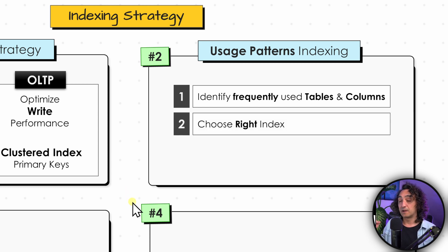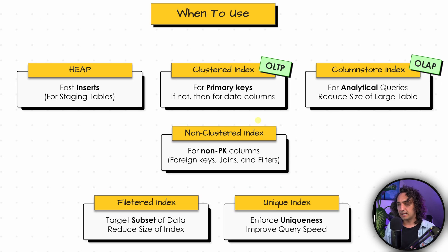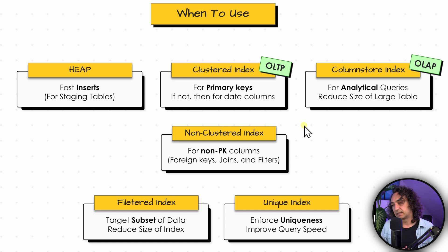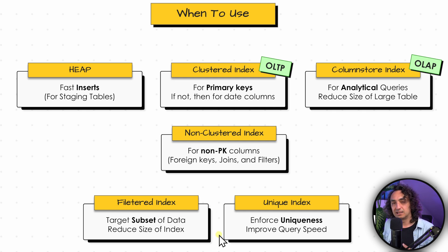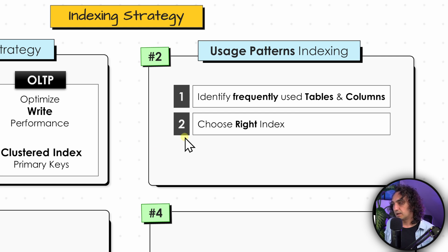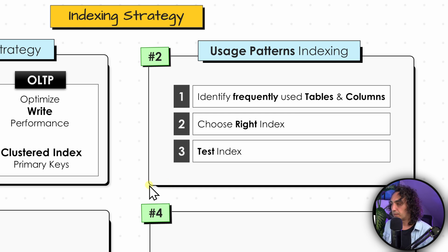Based on those usage statistics, the next step is to choose the right index type. If columns are primary keys, go with a clustered index. If columns are used for joining or filtering but are not primary keys, consider a non-clustered index. For very large tables, use a columnstore index. If you always target a subset of data — like one year of information — think about a filtered index. If a column has no duplicates, apply a unique index. After creating the index, always test it to make sure everything is working.